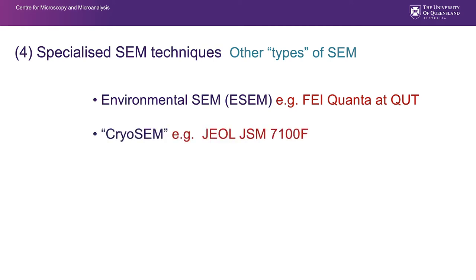A cryo-SEM allows you to look at frozen, cryogenically fixed samples. It is really a standard SEM that has a cryo-preparation unit and a cold stage cooled by liquid nitrogen inside the SEM. This allows us to look at wet and volatile samples that are difficult to image in an ordinary SEM where high vacuum is required. Keeping them frozen keeps them stable. We can coat them, fracture them, and image them, making it a unique instrument.